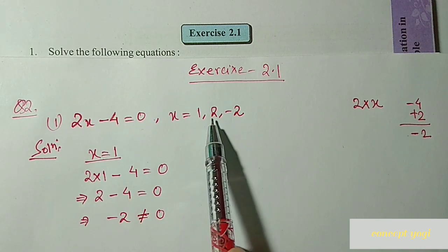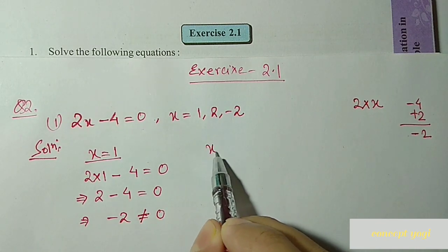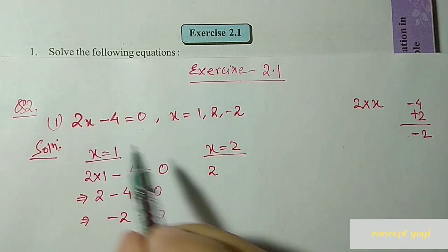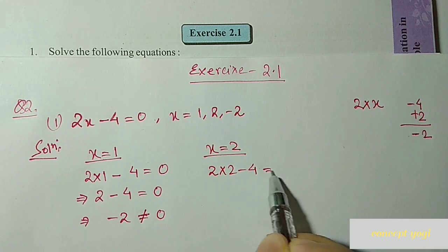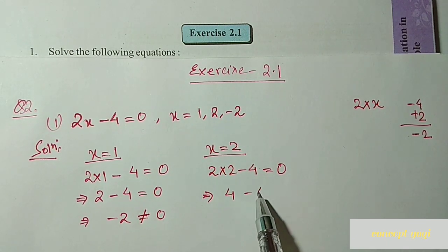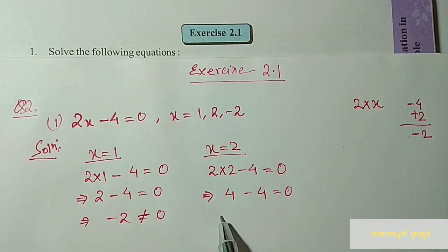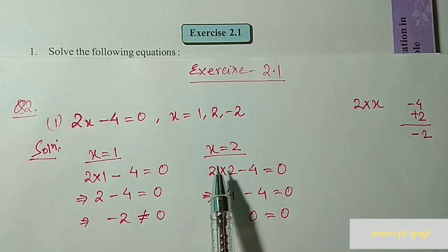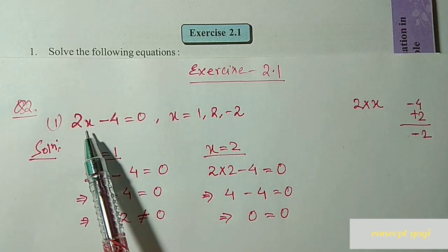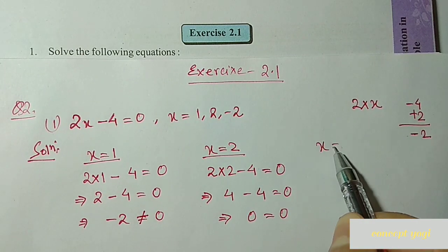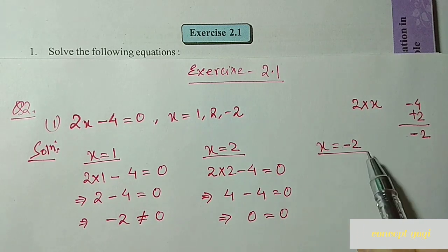Now we put x equal to 2: 2 into 2 minus 4 equal to 0. 2 into 2 is 4, and 4 minus 4 is 0. Left hand side is 0 and right hand side is also 0 — they are equal. So x equal to 2 is the solution of this equation.